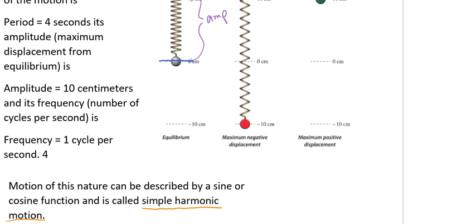It also looks like we have a little bit of a typo here. Our frequency should be one-fourth of a cycle per second.